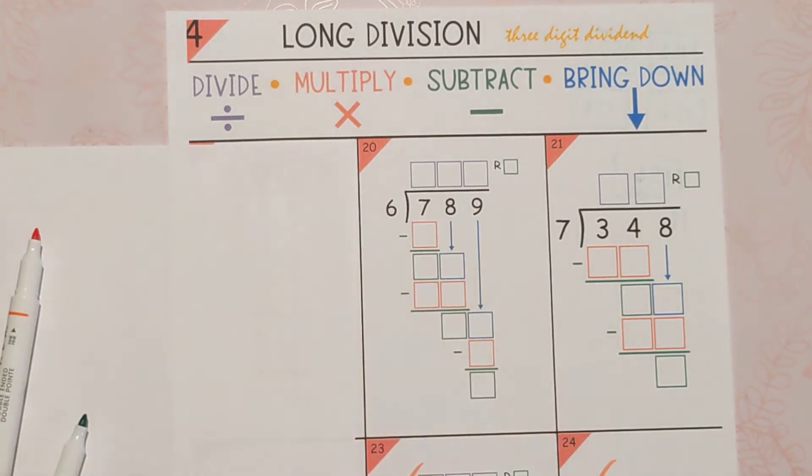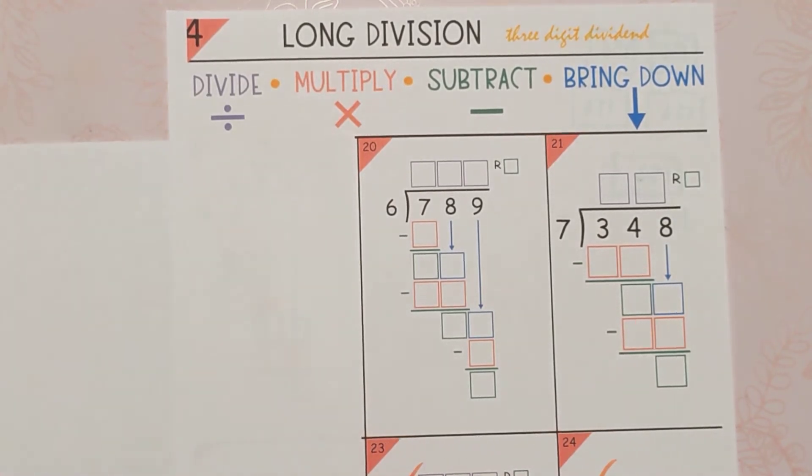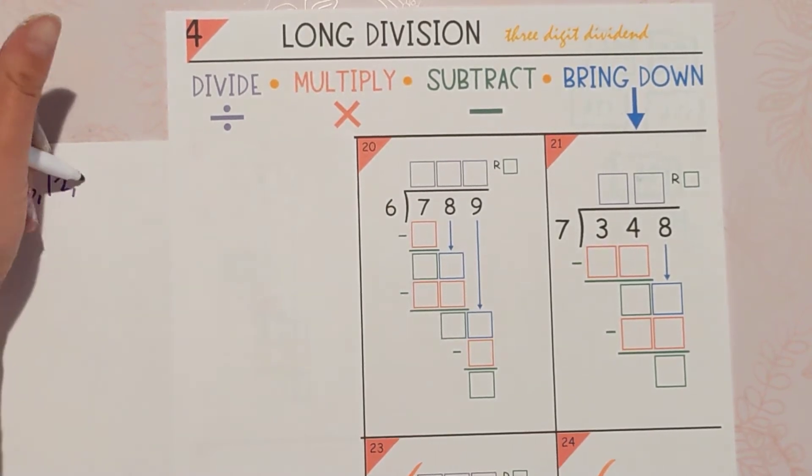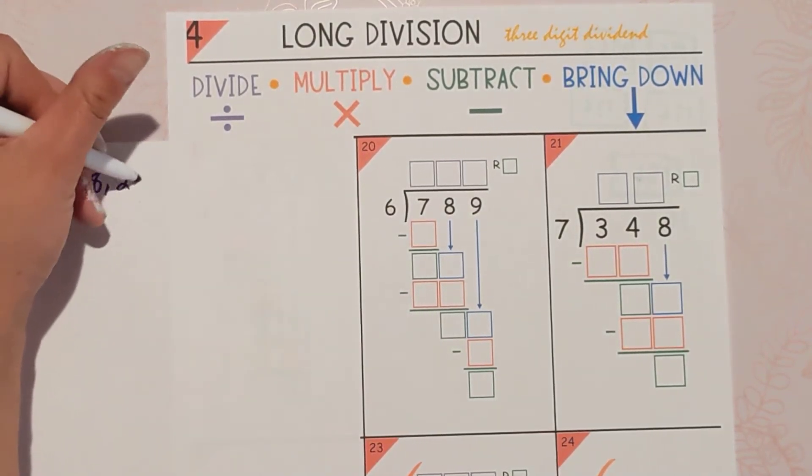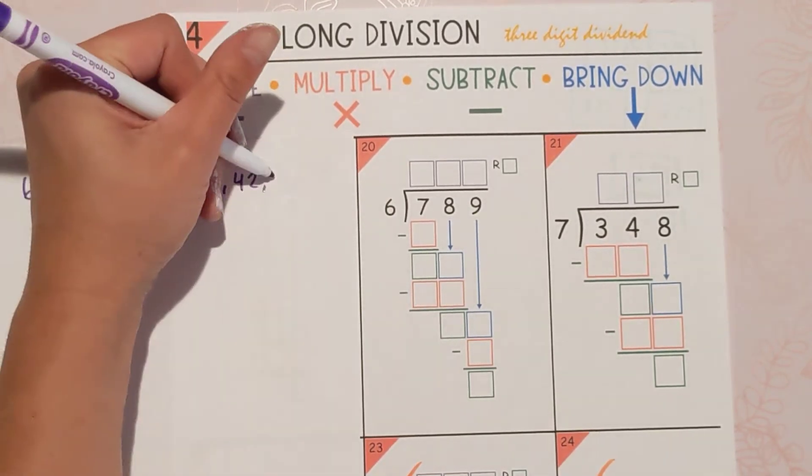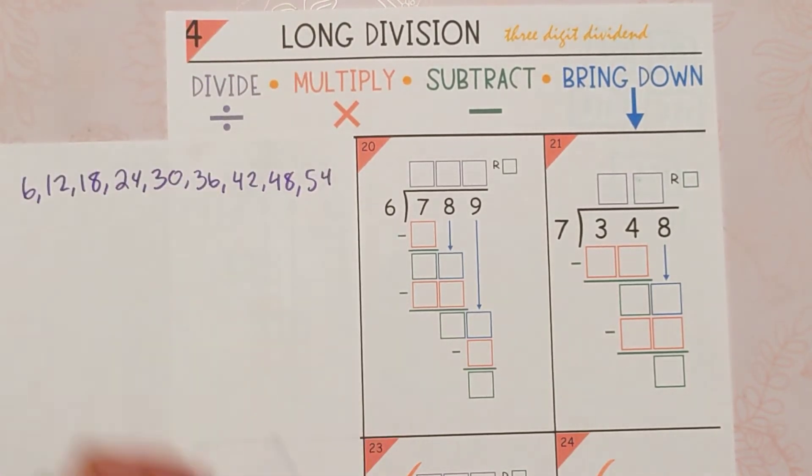Alright, step 1 is to divide. We're going to be using 6s. I like to skip count my 6s first, just so that I have those ready to go. Division and multiplication work together. So if I ask you to divide by 6s, you're also just saying, how many times can I skip count my 6 to hit that?